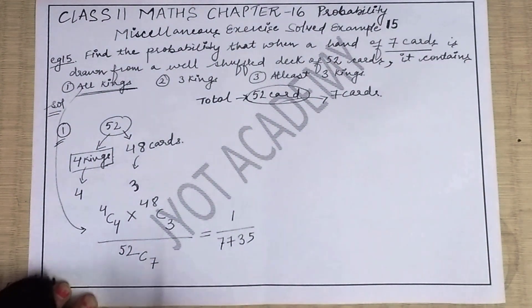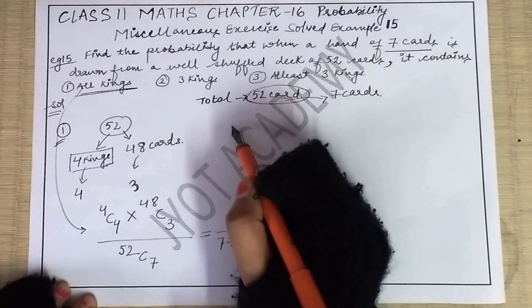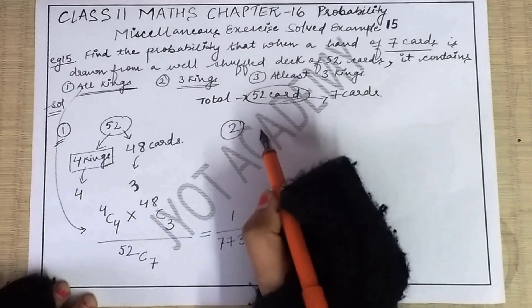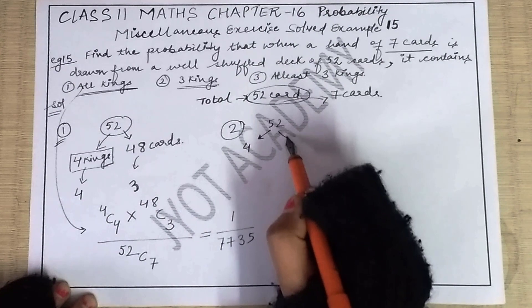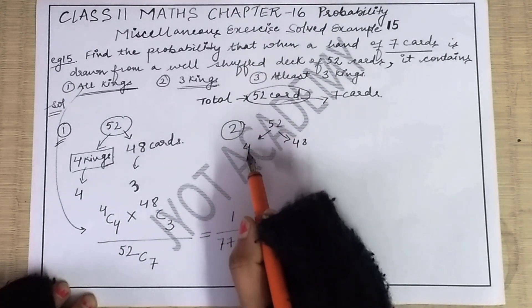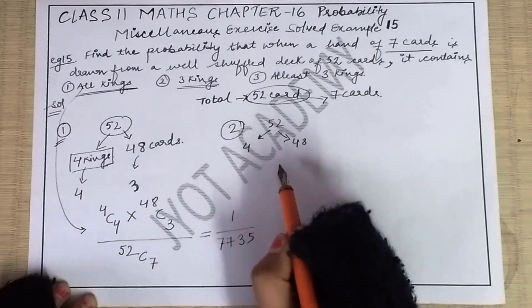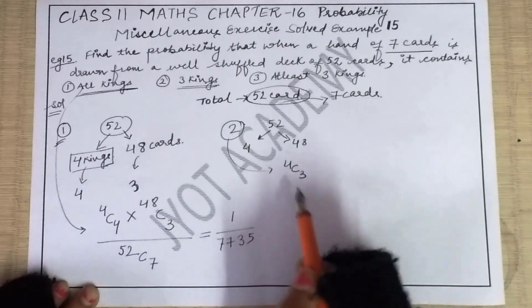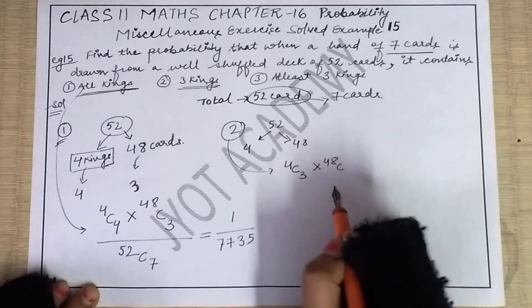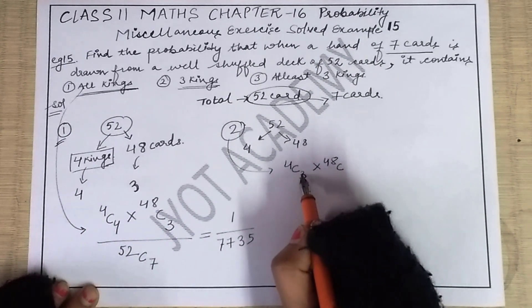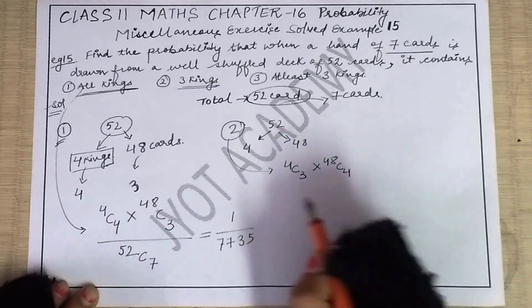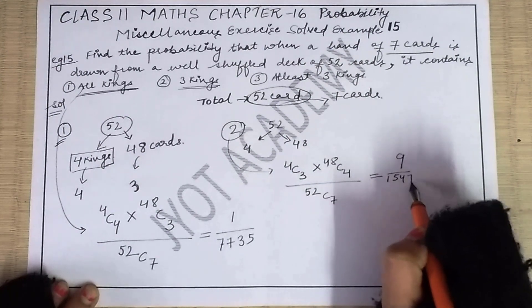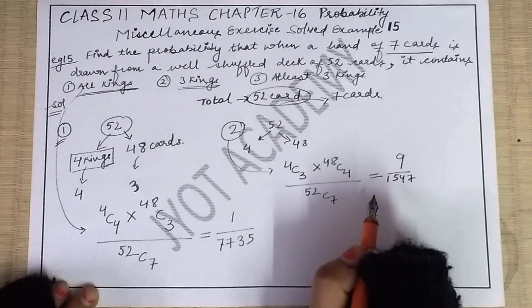Now let's see the second part: you need exactly three kings when seven cards are picked. You have four kings and 48 remaining cards. From four kings, choose only three kings — that is 4C3. To complete seven cards, since three kings are already chosen, you need four more cards from 48 remaining cards, that is 48C4. The denominator is 52C7. Solving this gives 9/1547.